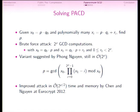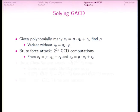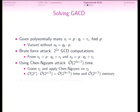Now I consider the general problem — the variant without the exact multiple — where we are given only polynomially many XIs that are approximate multiples of P. The brute force attack uses X1 and X2, guessing R1 and R2 to perform the GCD, taking 2^(2ρ) computations. We can also apply the Cohn-Nguyen attack by guessing R1 to obtain an exact multiple, then applying Cohn-Nguyen on R2, giving 2^(3ρ/2) time and 2^(ρ/2) memory — better than brute force.